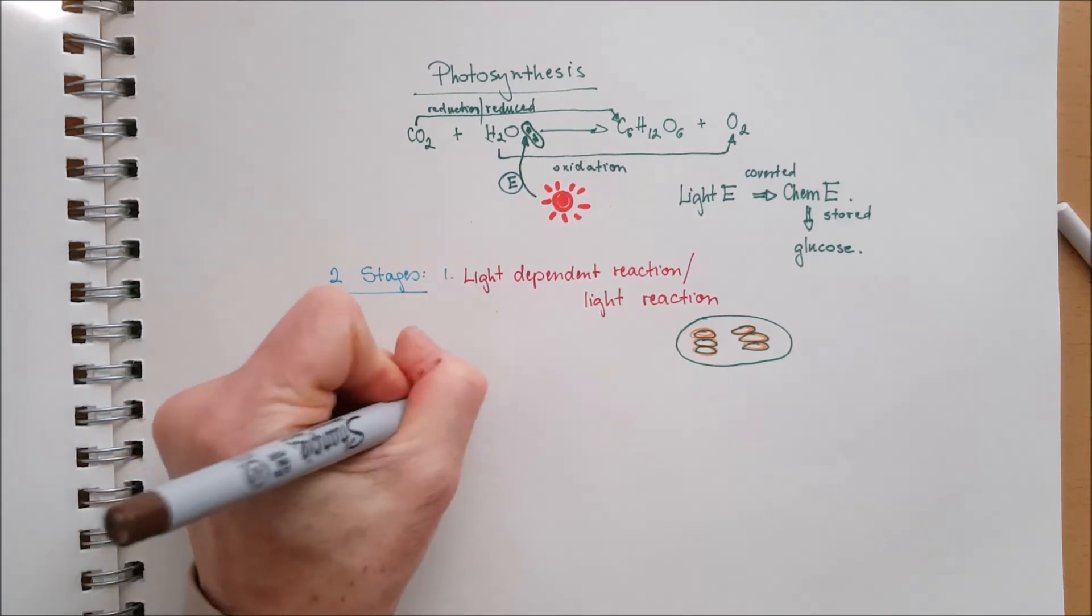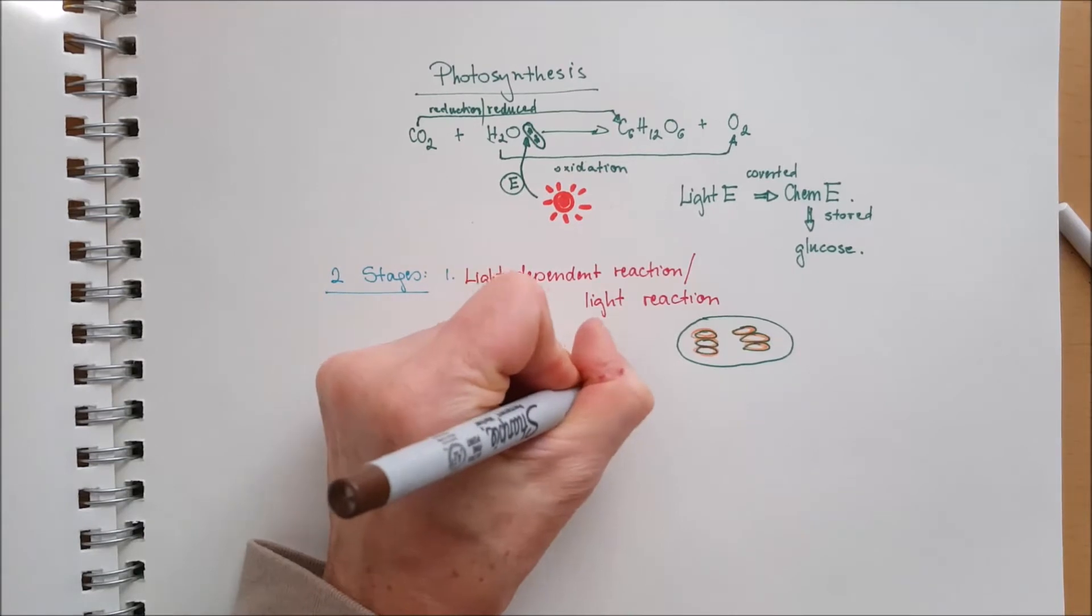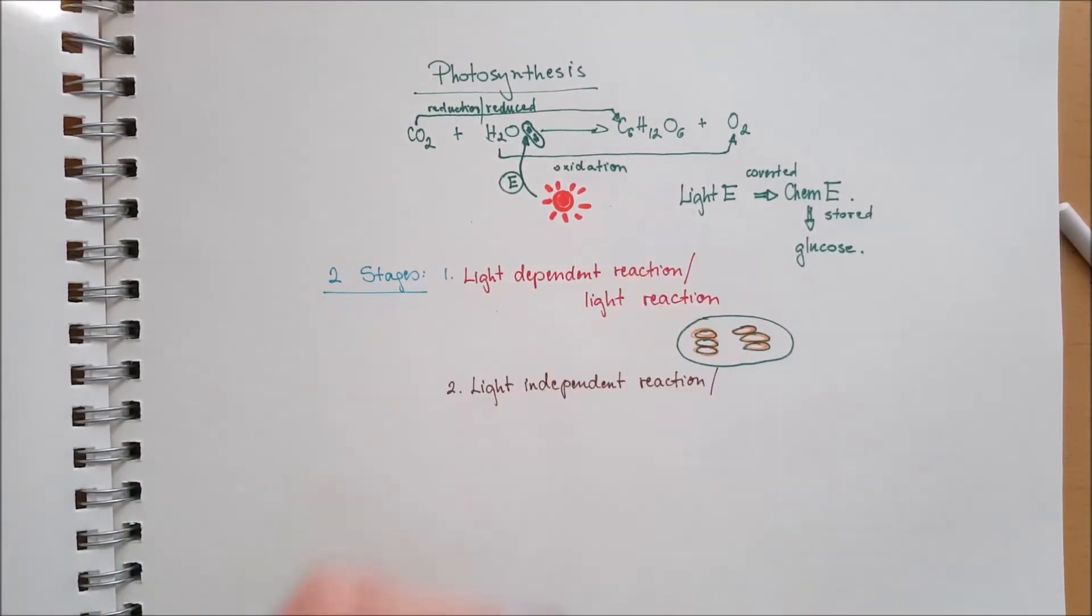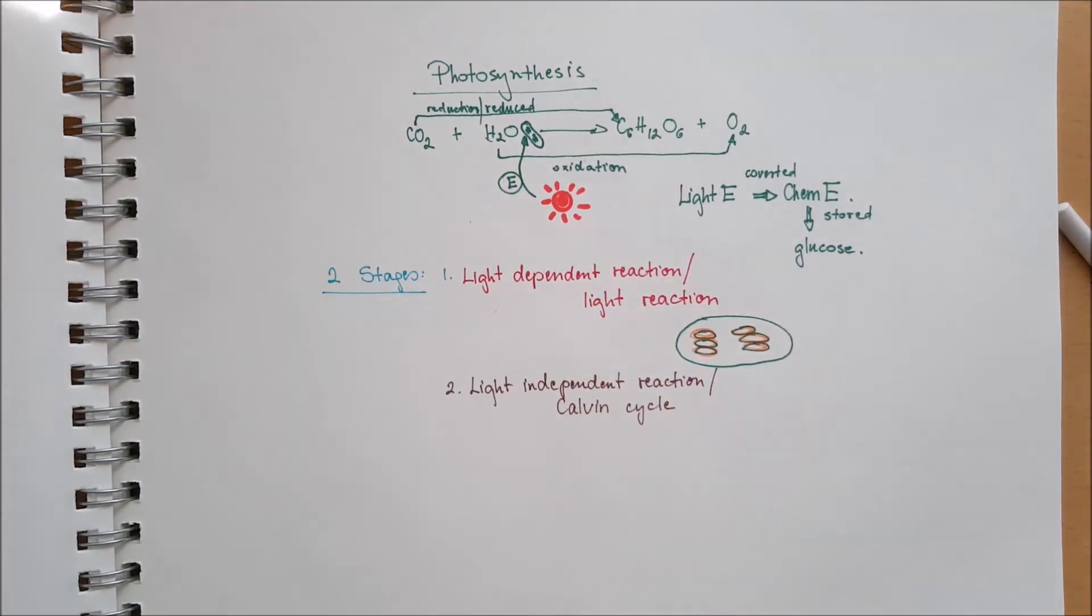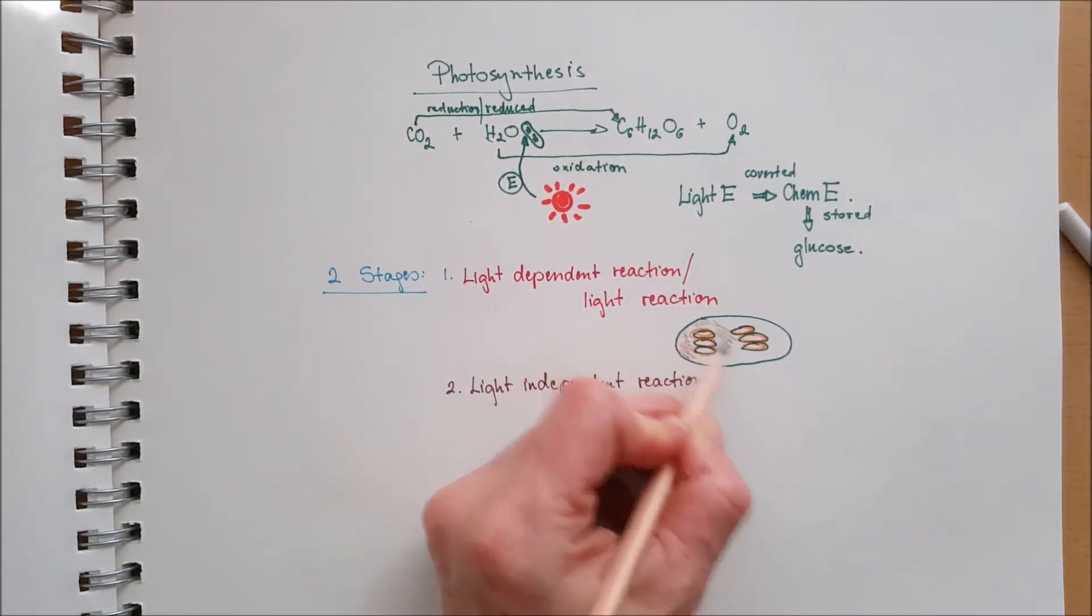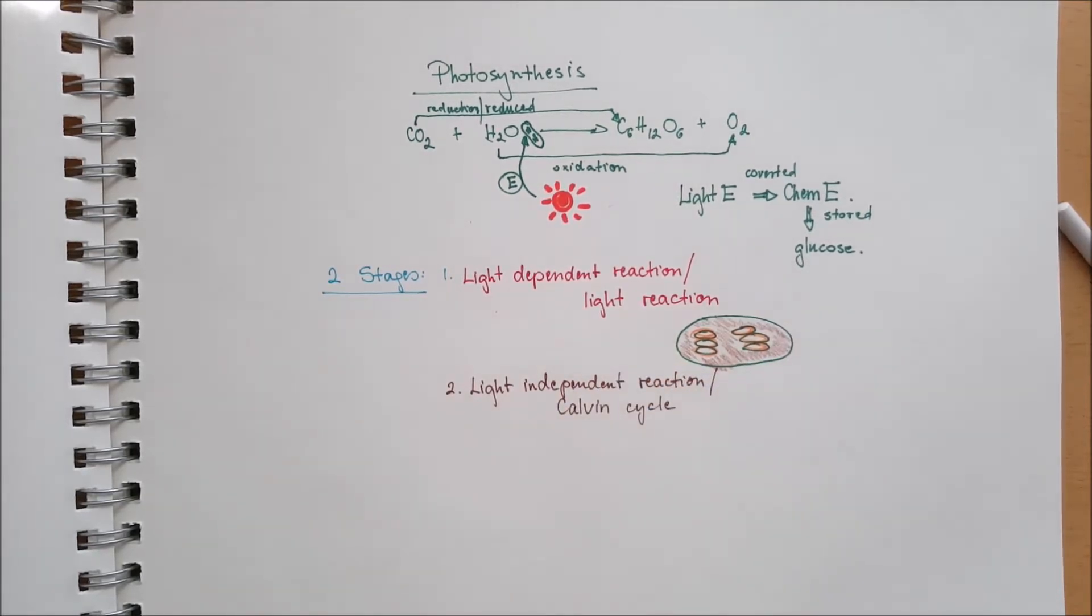The other part, the other stage of the photosynthesis is the light independent reaction, or the Calvin cycle. It has its name, like the cellular respiration had the Krebs cycle. Now we are having the Calvin cycle in here. The Calvin cycle happens in the stroma of the chloroplast.